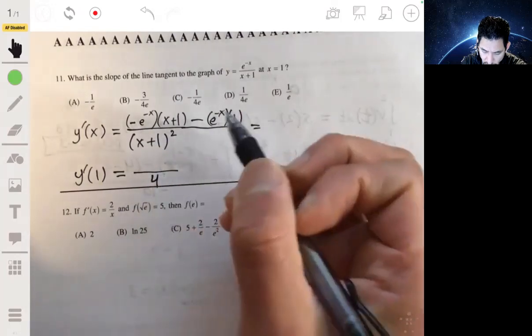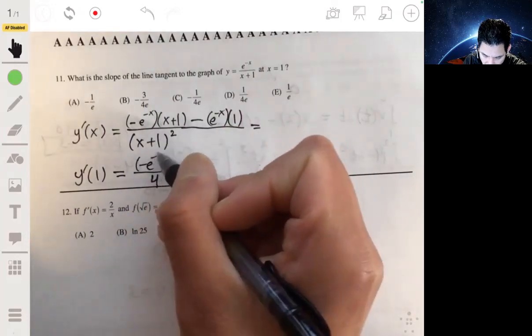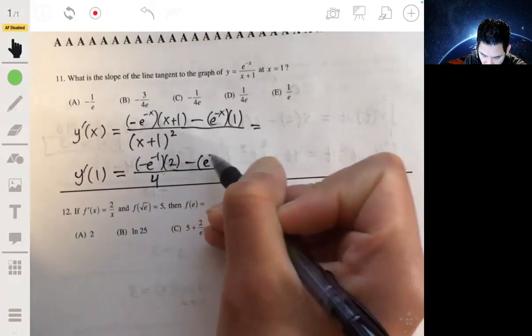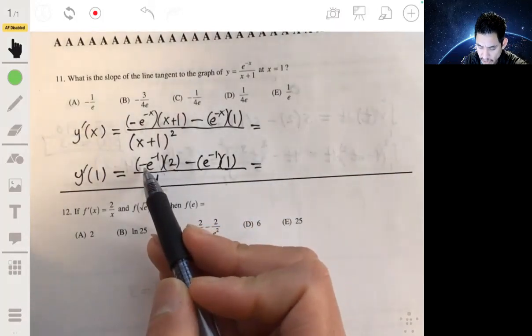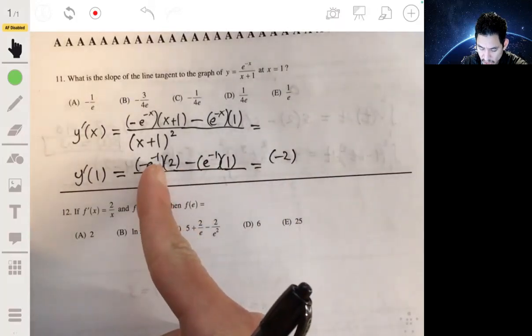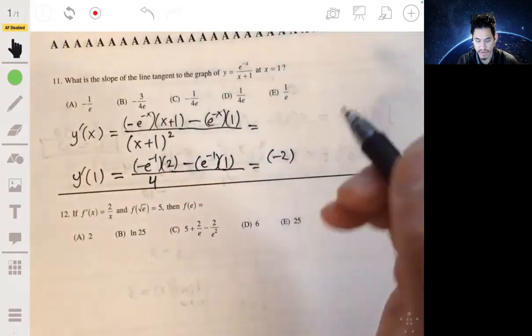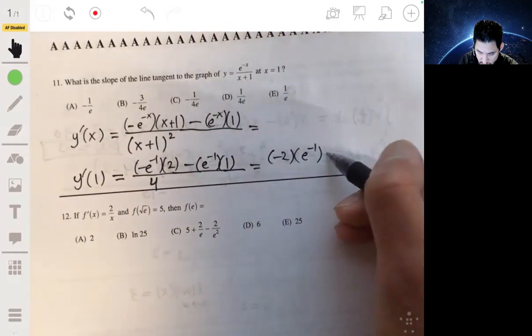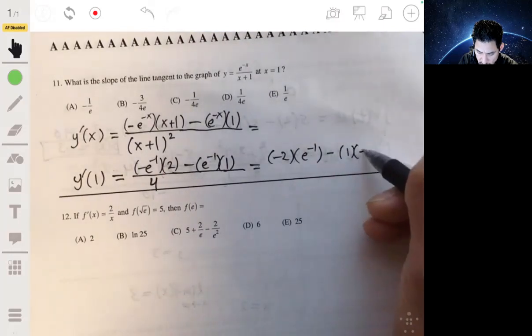So we would get 1 plus 1, so on the bottom we would get 4, 1 plus 1 squared, so 2 squared. On top we get negative e^(-1) times 2 minus e^(-1) times 1. Simplifying, we have, this is the same as negative 2 times e^(-1) minus e^(-1). So you basically have, let me write it like this, so that we can see it better. So minus 1 times e^(-1).